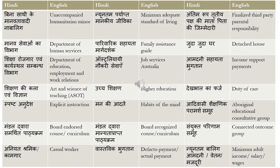'Aniyat Shramik' or 'Kaamgaar' means casual worker — Aniyat means casual, Shramik or Kaamgaar means a worker. 'Vastavik Bhuktaan' is de facto payment or actual payment. 'Nyunitam Balig Amdani' is minimum adult income; Balig means adult or a person who has crossed 18 years of age. Similarly, Nyunitam Balig Vetan is minimum adult salary and Nyunitam Balig Mazduri is minimum adult wages.